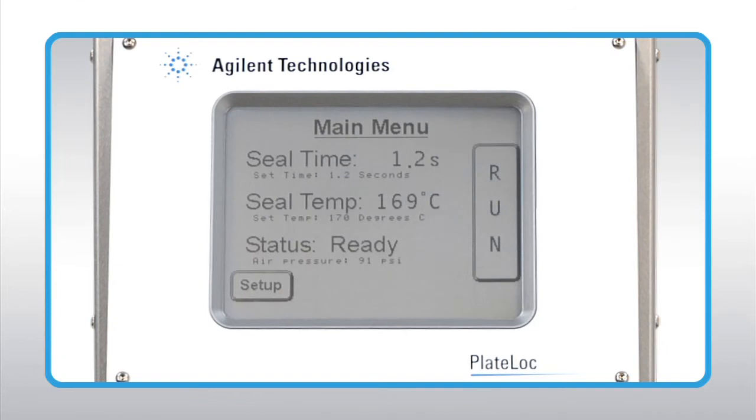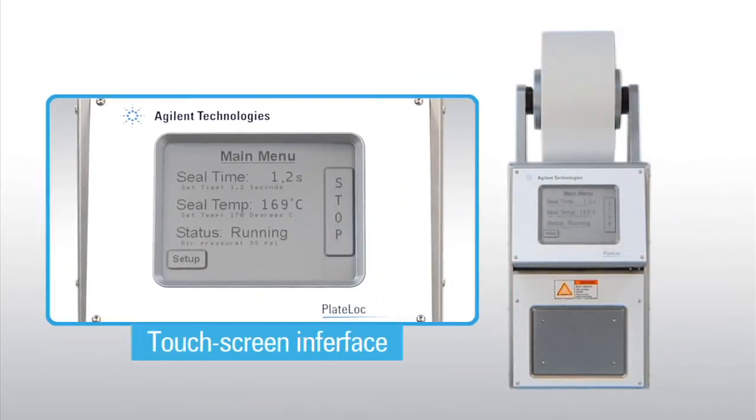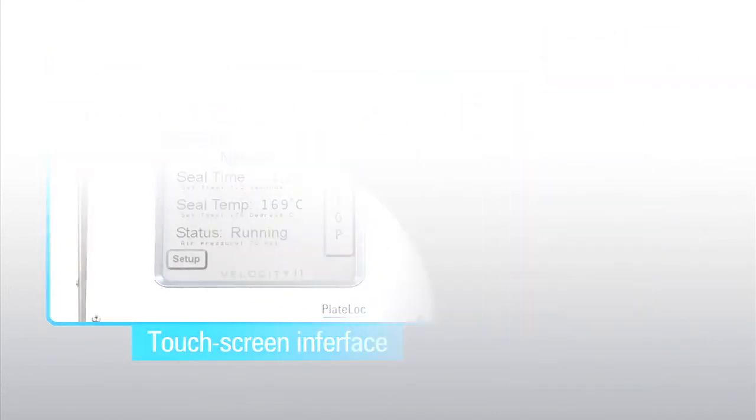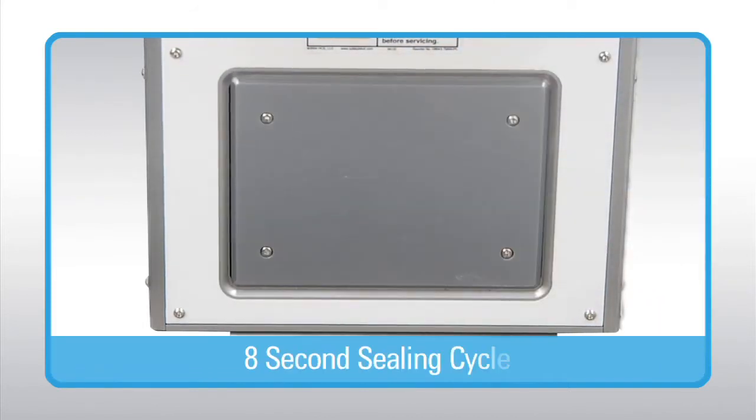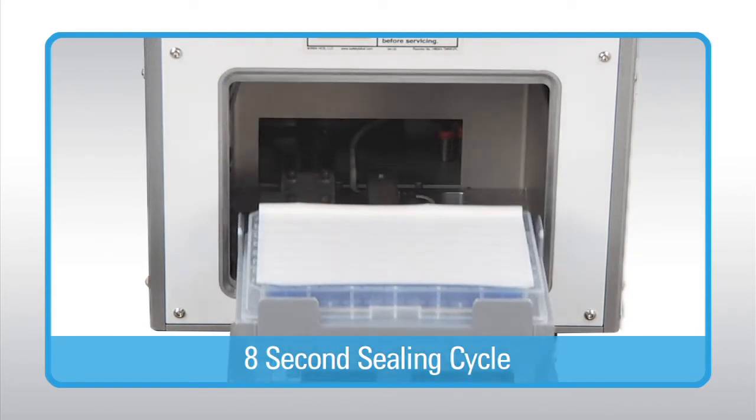A large, easy-to-read touchscreen interface allows for fast and easy manual operation. The PlateLock is ready to quickly respond to plate sealing chores since no cool-down periods are required. The typical sealing cycle is 8 seconds.